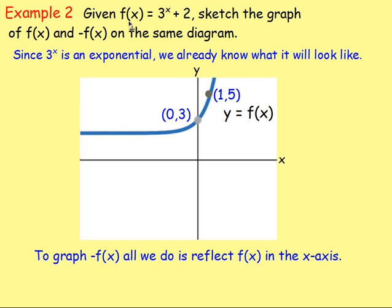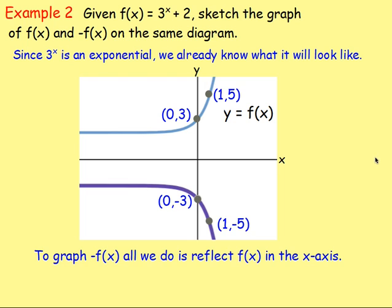That's our sketched f of x. So now we want to sketch negative f of x. Remember, if you've got f of x to sketch the negative of f of x, you're going to reflect it in the x axis. So reflecting it over, you would get something that looks like that.